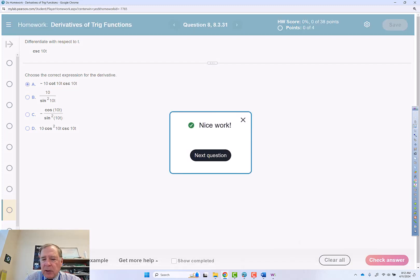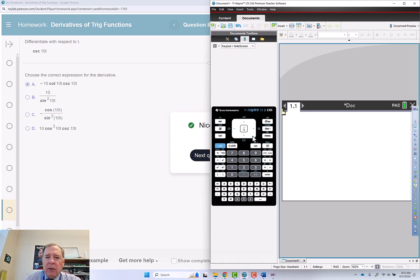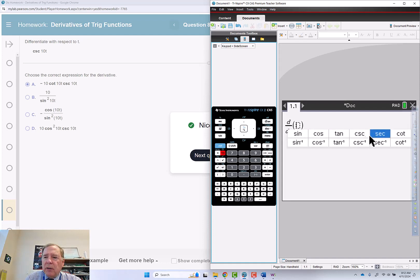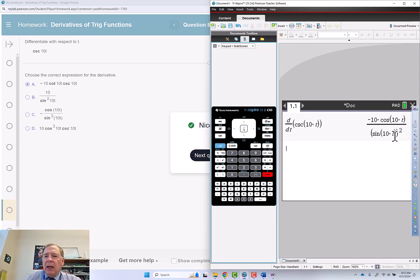And then could we do this in the calculator? Absolutely. Shift minus our variable is t. Tab trig function cosecant 10t. And that does look a little bit different. So this is the alternate way of saying this.